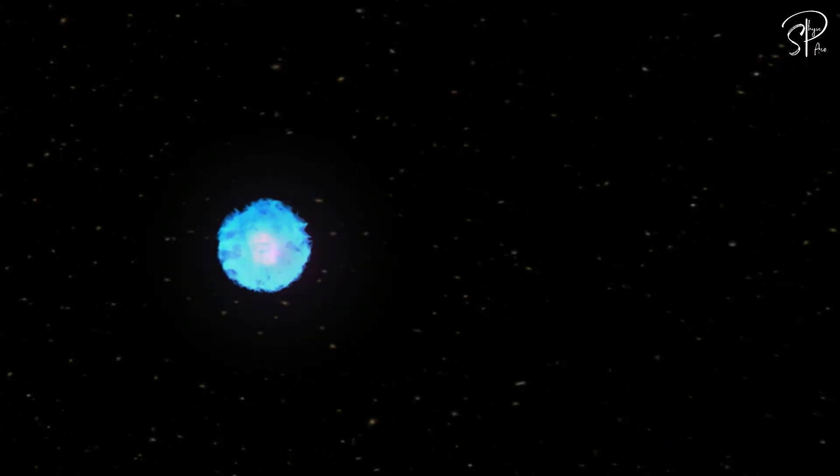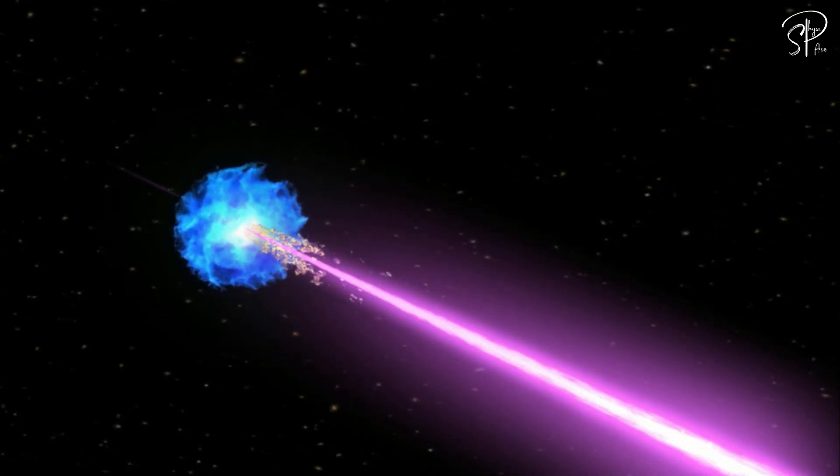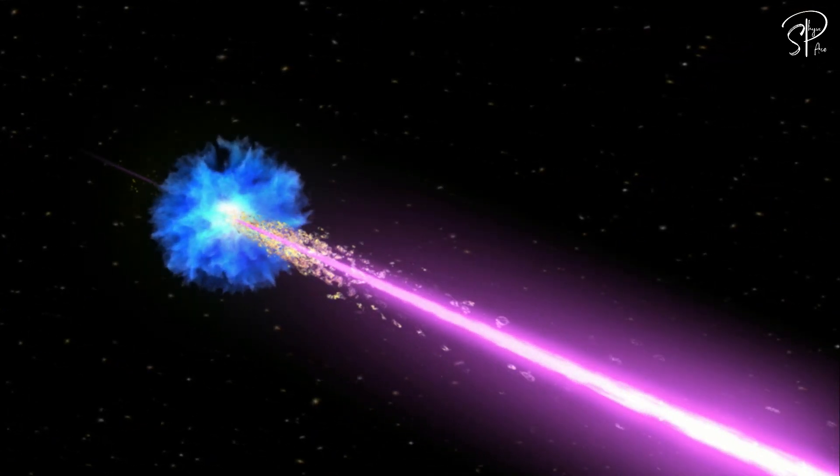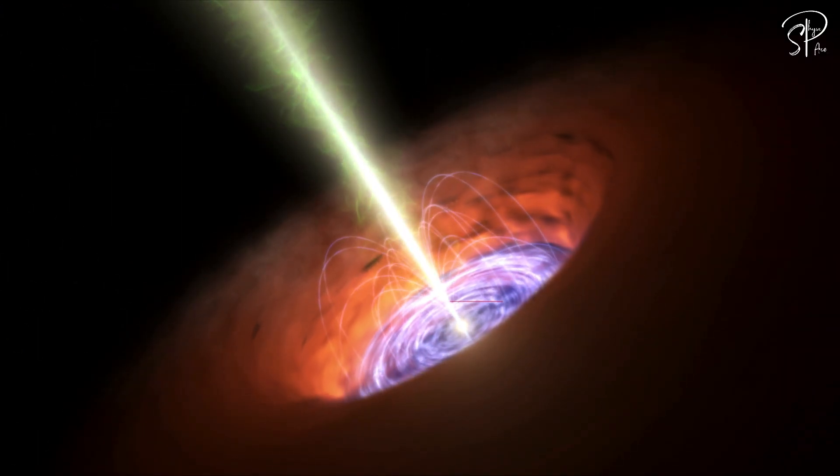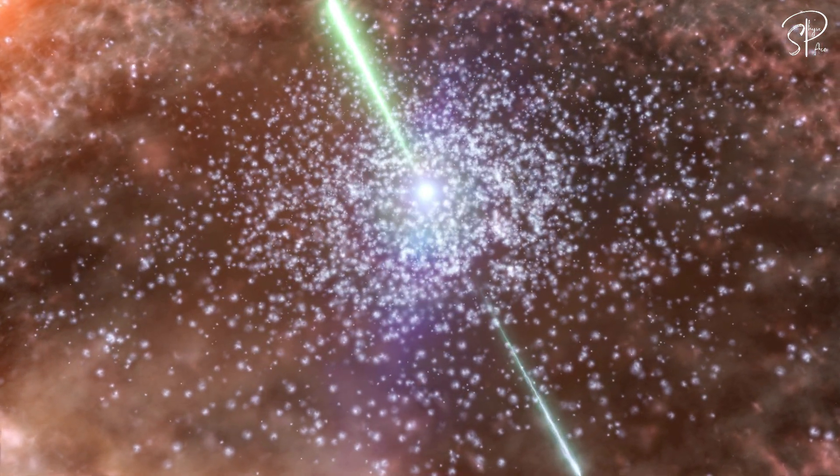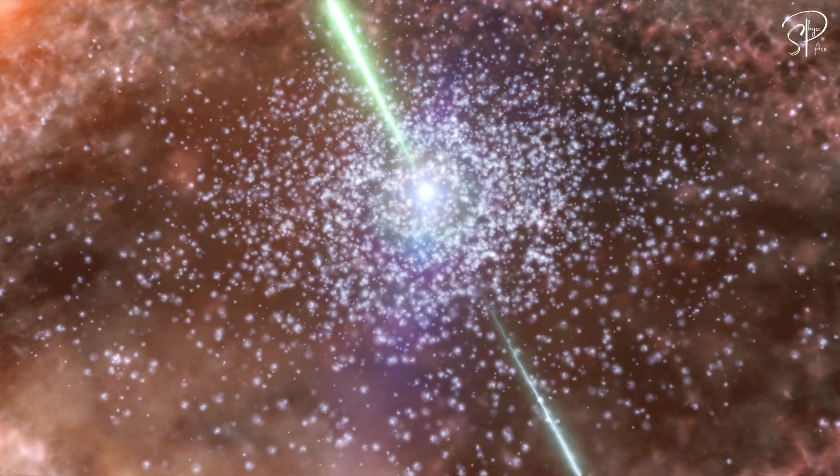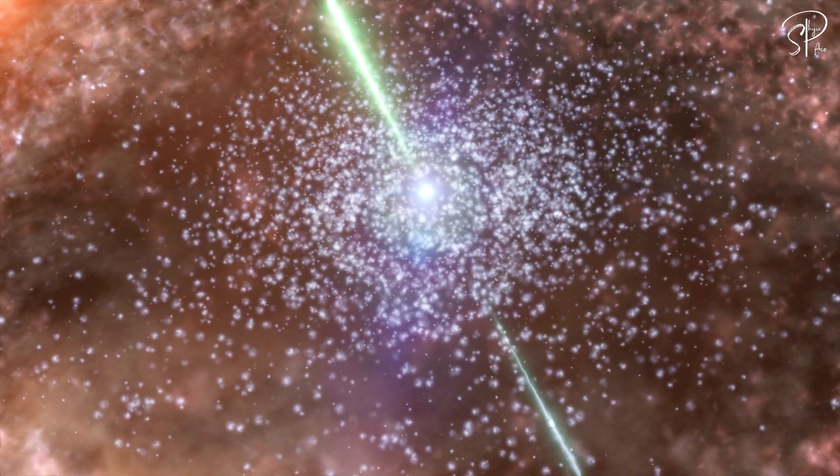With AGN, an extraordinary characteristic emerges: the presence of relativistic jets. These jets materialize when particles undergo acceleration to immense speeds amidst a powerful magnetic field, instigating the expulsion of ionized matter into the rotational axis of the black hole, emitting primarily in radio wavelengths. These energetic outflows give rise to dual beams of high-energy particles, aptly named jets.